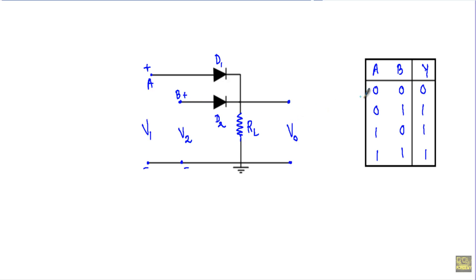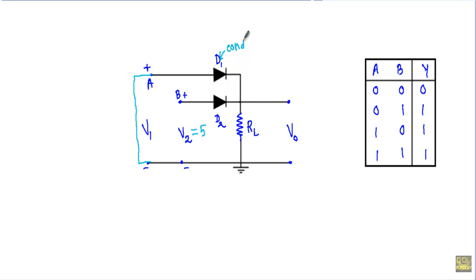Now let me talk about the second case: A is at logic 0 and B is at logic 1. I will apply 5 volts between the B terminal and ground. Since A is at logic 0, I will connect the A terminal directly to ground. Because this A terminal is directly grounded, diode D1 will not conduct. Since D1 will not conduct, I can replace diode D1 with an open circuit.